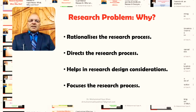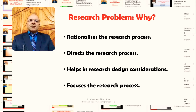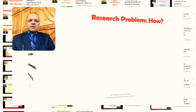Secondly, it directs the research process. We need some direction in order to conduct useful research, and the identification of a clear and precise research problem will actually help us direct our research process in the desirable direction. Further, the identification of a good research problem helps us in our research design considerations — our research design will be in response to our understanding of our research problem. And lastly, it helps in focusing our overall research project.